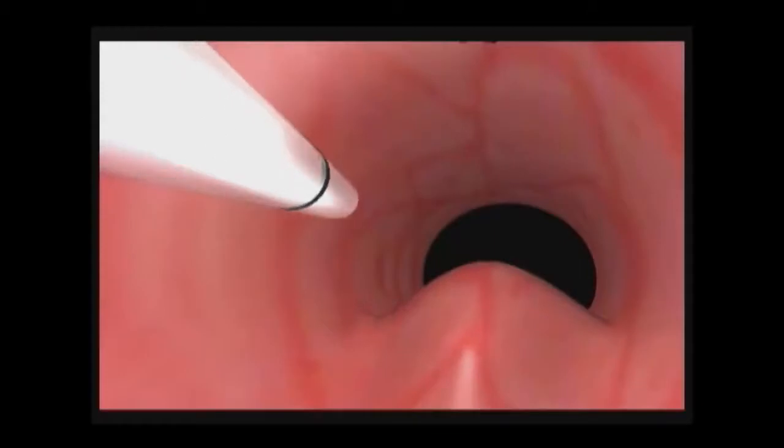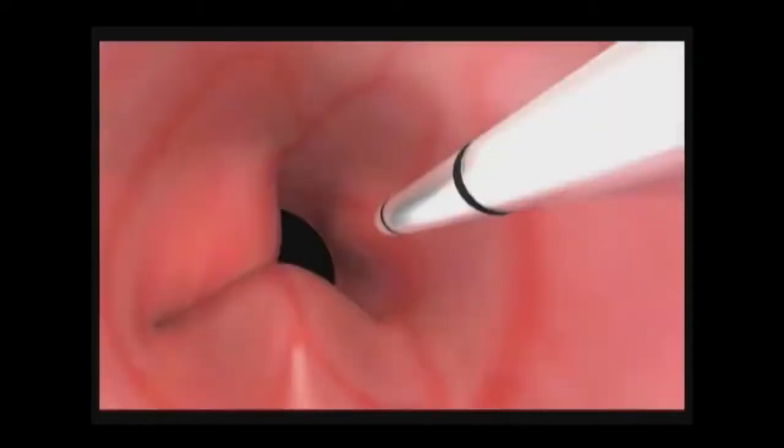You will use the second 2.5 milliliter macroplastique syringe to create boluses in the 10 and 2 o'clock positions. Each of these boluses will hold approximately one half of a syringe, about 1.25 milliliters, of macroplastique. These boluses are created following the same tissue tunneling and injection procedure as demonstrated with the 6 o'clock location.